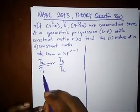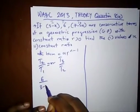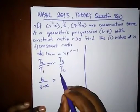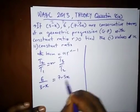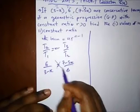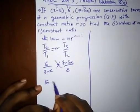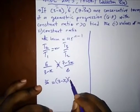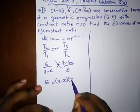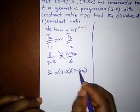So we have 6 divided by (3 minus x) equal to (7 minus 5x) divided by 6. We cross multiply to get 6 times 6, which gives us 36, equal to (3 minus x)(7 minus 5x). Since this is a theory question, we show our working clearly.